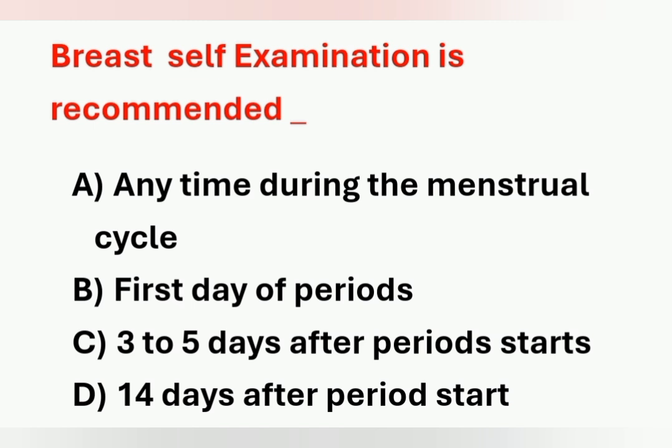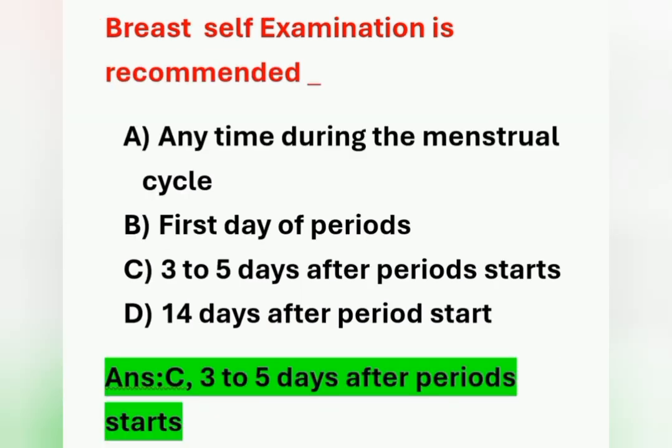Next question: breast self-examination is recommended on which option? Option A – anytime during the menstrual cycle. Option B – first day of periods. Option C – three to five days after the period starts. Option D – 14 days after the period starts. The best time to perform breast self-examination is three to five days after the period starts. Option C is the correct answer.